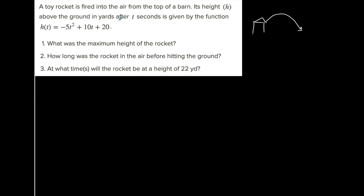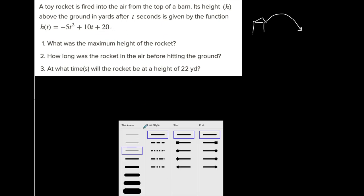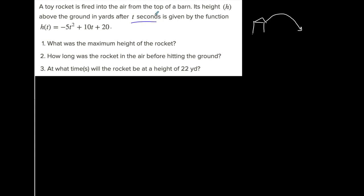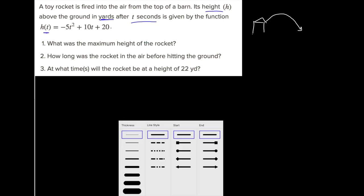The height above the ground is in yards after t seconds. So that's the function. T is in the place of x, and H of t is in the place of y. T is in seconds — it's time. So we want to know what the variables represent: H of t is height above the ground in yards.